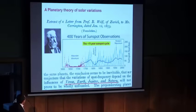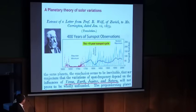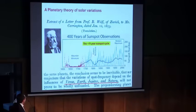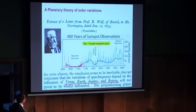This theory is quite old — it was introduced by Wolf more than 150 years ago. Wolf is the person who essentially organized the sunspot record and thereby identified the 11-year solar cycle. He asked himself: what is the origin of this 11-year solar cycle? And he concluded that the 11-year solar cycle could depend on the combining influence of four planets: Venus, Earth, Jupiter, and Saturn.